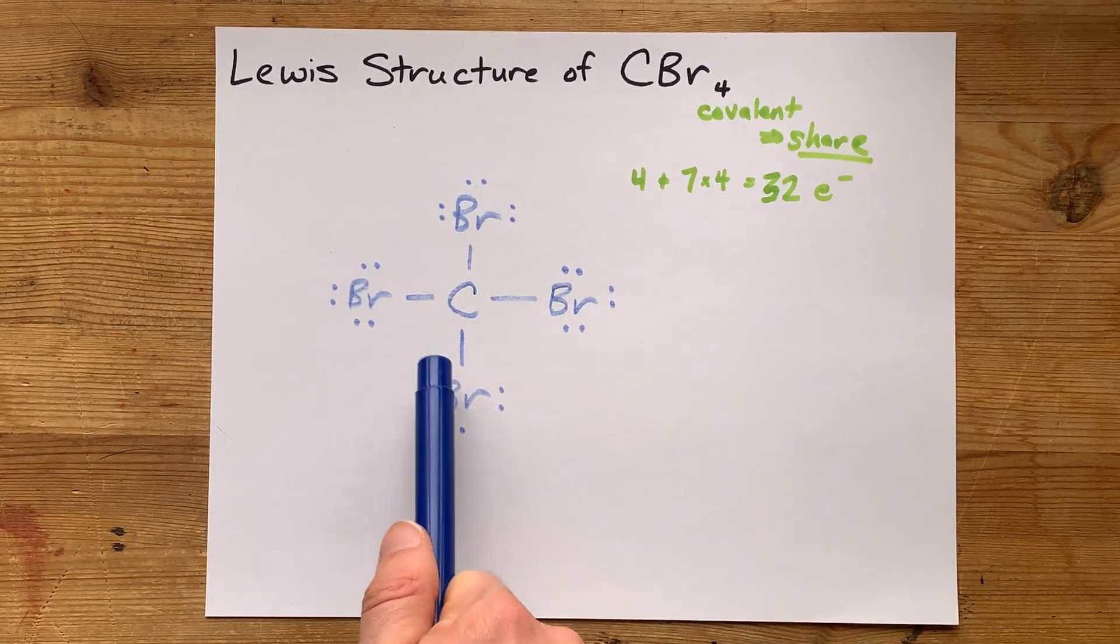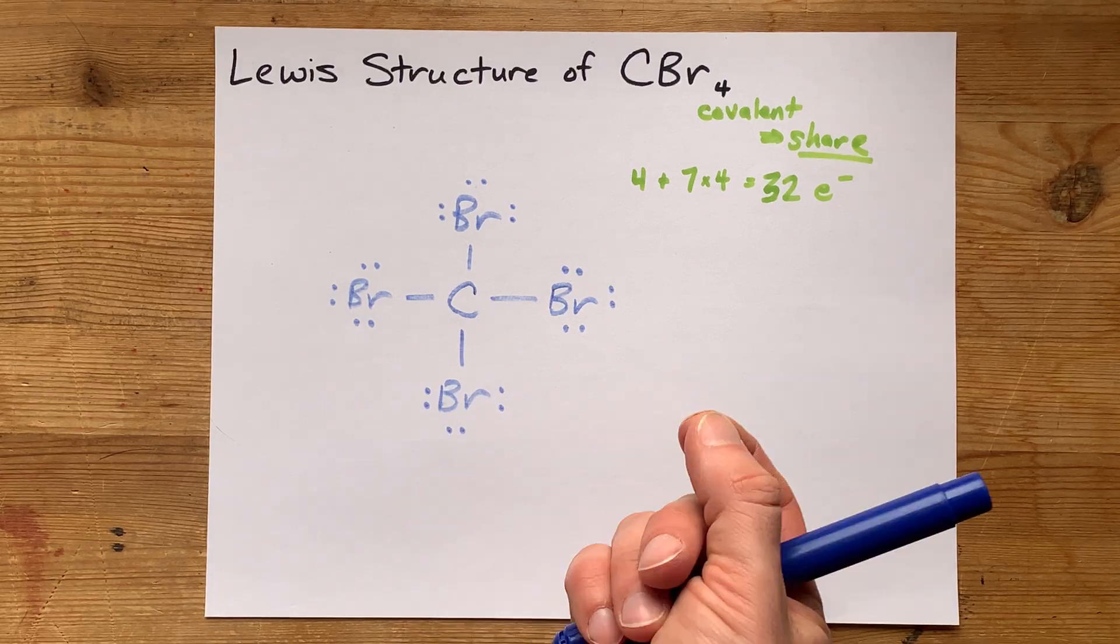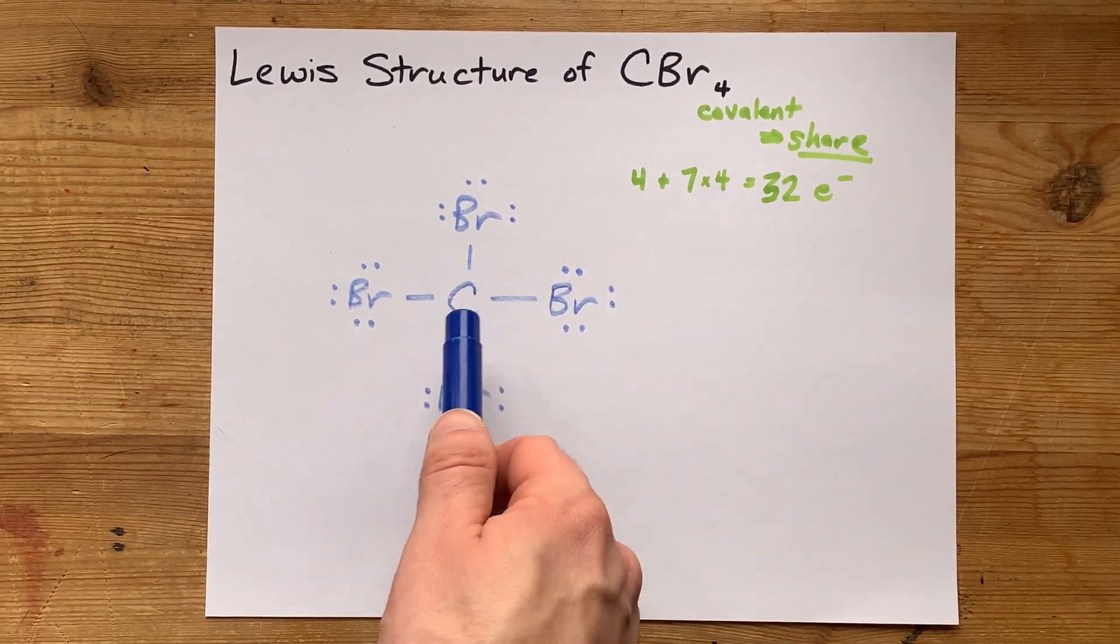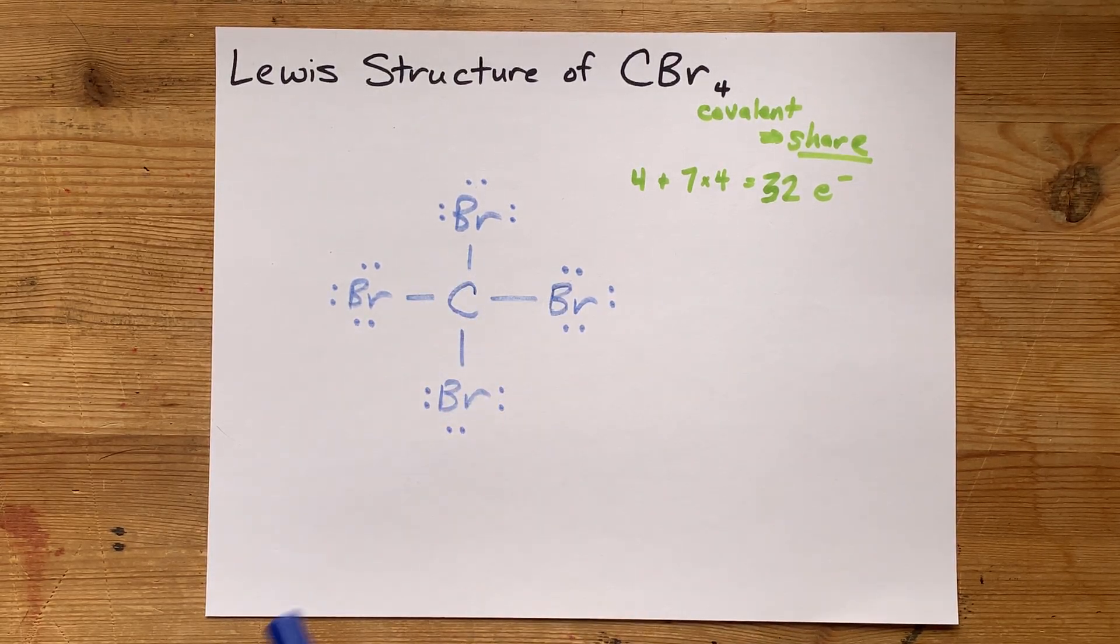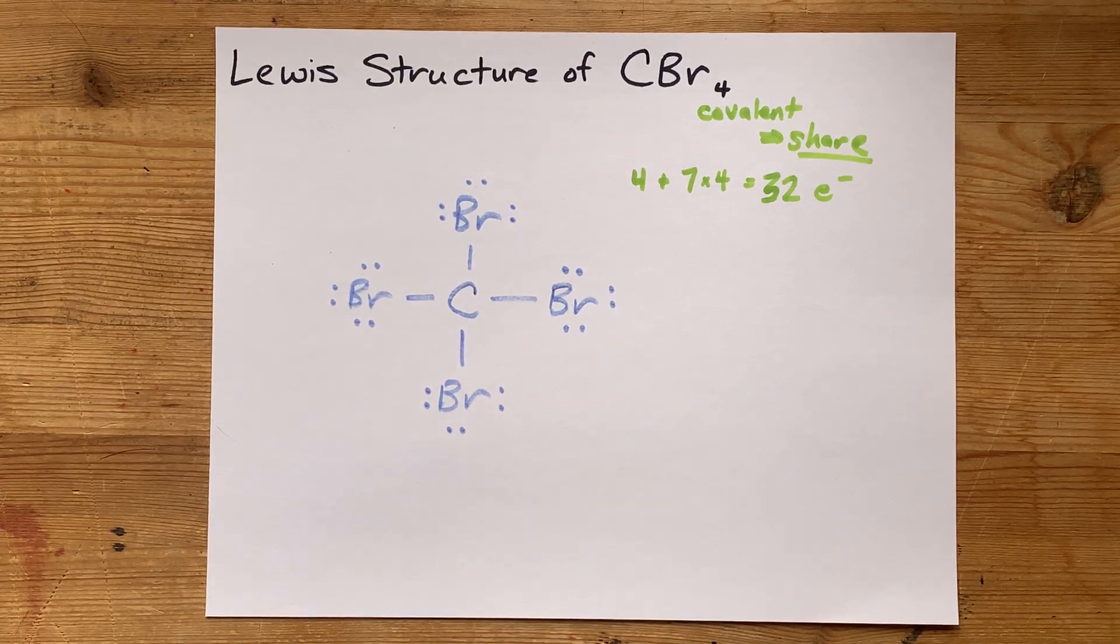And the octet of each of the bromines is complete, and the octet on the central carbon is also complete. This is the completed Lewis structure for carbon tetrabromide.